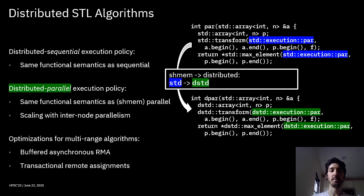Finally, we introduced some optimizations for algorithms that access more than one range. For instance, the transform accesses one range in input, the a.begin, a.end in the example, but also an output range, and there is no guarantee that the data are in a sense collocated so that you can do the assignments, both the read and the write parts of the assignments or insertions, without leaving the node in your multi-node execution scenario. So we introduced two forms of optimizations: one is buffered asynchronous remote memory accesses, and the other one is transactional remote assignments. Both are trying to limit the costs of single item remote accesses, doing some grouping and also exploiting some pipelining to reduce, to hide the cost, the latency for remote accesses.